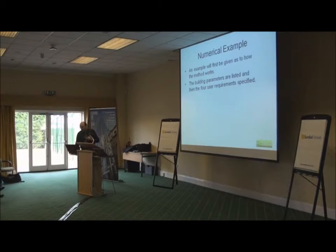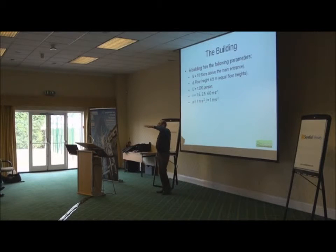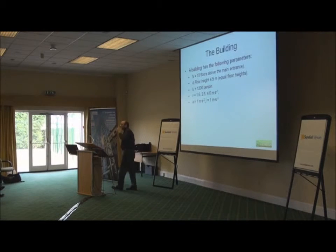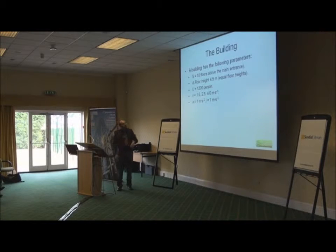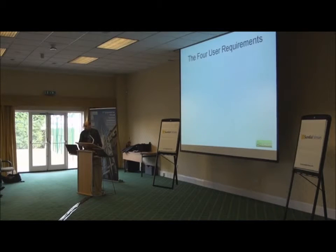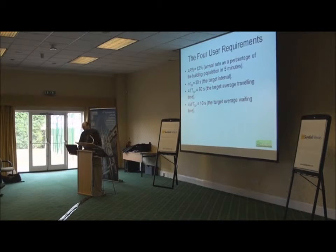Let's take a numerical example — this is an actual building. The total population, using three speeds. With the Harren Space we can use more than one speed. You remember the discussion about dividing by 20 this morning? You can try a range around 20 — divide by 15, by 20, by 25 — giving you a range of speeds to start working from. I've put simple values for acceleration, jerk, door opening time, and door closing time. The four user requirements: 12%, 30-second interval. I've used 60 seconds and 10 seconds for traveling time and waiting time because they gave a nice answer.